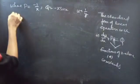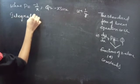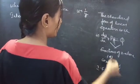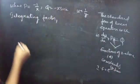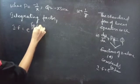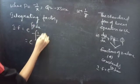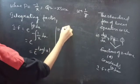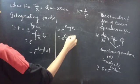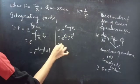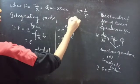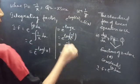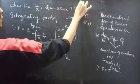Now let's find the integrating factor. The integrating factor of the linear equation in u is e^(∫P dx) = e^(∫−1/x dx) = e^(−log|x|) = e^(log x⁻¹). Using the property that e^(log f(x)) = f(x), our integrating factor is 1/x.